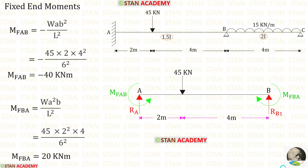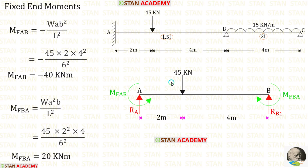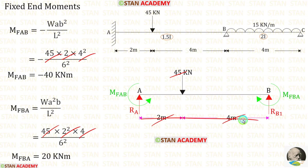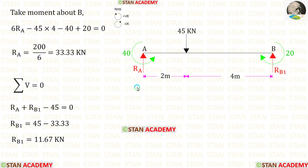Now we are going to find the fixed end moments and reactions. First, let us find them in span AB. In span AB we have an eccentric point load of 45 kilo newton. The formulas to find the fixed end moments are: minus W·a·b² / L² and positive W·a²·b / L². Applying the values where W is 45, a is 2, b is 4, and total length is 6, for M_AB we get minus 40 kilo newton meter and for M_BA we get 20 kilo newton meter.